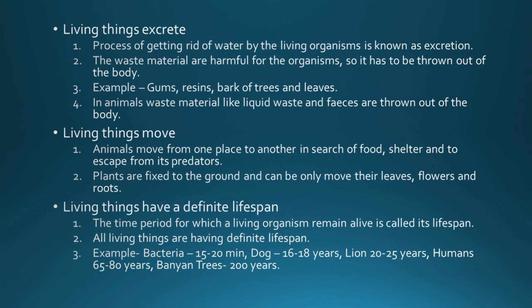The next characteristic is: living things move. All animals move from one place to another in search of food, shelter, and to escape from predators. Plants cannot move from place to place but they grow, and movement occurs in their leaves, flowers, and roots. The final characteristic is that living things have a definite life span — the time period for which a living organism remains alive. For example, bacteria live 15 to 20 minutes, dogs 16 to 18 years, lions 20 to 25 years, humans 65 to 80 years, and peepal trees up to 200 years.